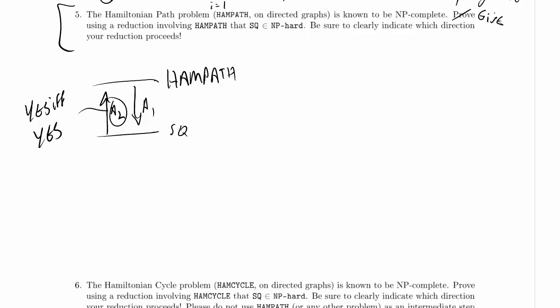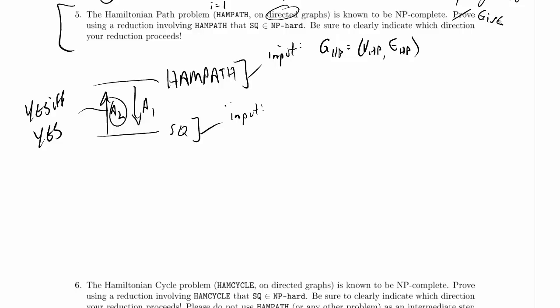The first thing we need to know is what's the input to HAMPATH. An instance of HAMPATH looks like a graph G_HP = (V_HP, E_HP). This is the directed version, which is nice because the graph for SQ is also directed. An instance of HAMPATH also includes S_HP and T_HP — those are the start and end nodes for our path.